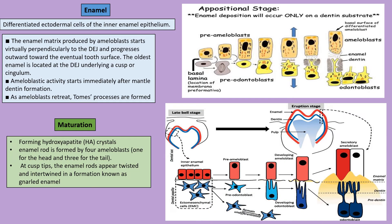Enamel is the most calcified and hardest substance in the human body; it is semi-translucent. Enamel arises from ectodermal cells of the enamel epithelium, which differentiate into ameloblasts. Ameloblasts induce dental papilla cells to become odontoblasts; odontoblasts lay down the dentine matrix first, then ameloblasts make the enamel matrix. Enamel matrix production starts perpendicular to the DEJ and progresses outward toward the eventual tooth surface. The oldest enamel is located at the DEJ underlying the cusp or cingulum.